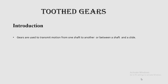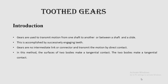What is meant by toothed wheels or gears? Gears are used to transmit motion from one shaft to another, or between a shaft and a slide. This is the main use of gears — to transmit motion from one shaft to another. This is accomplished by successively engaging teeth. Gears are not intermittent links or connectors; they transmit motion by direct contact.